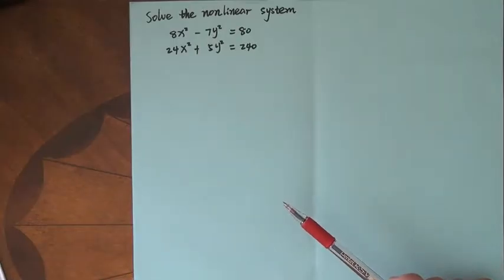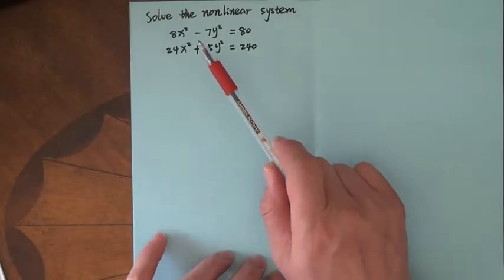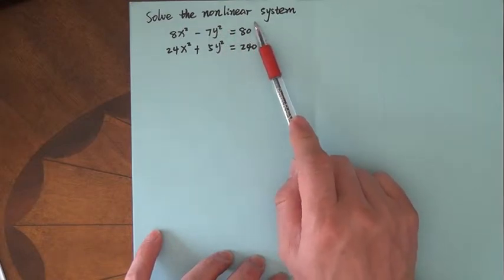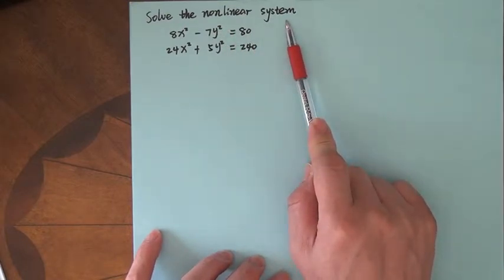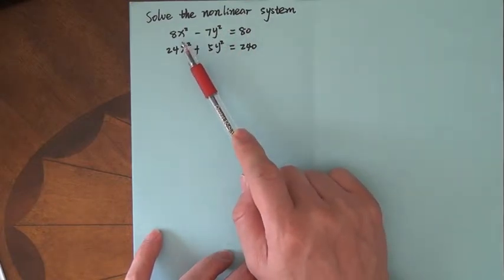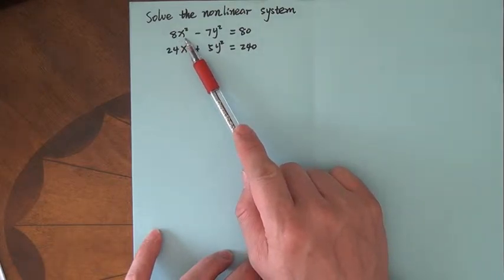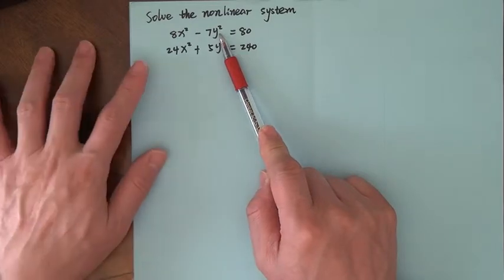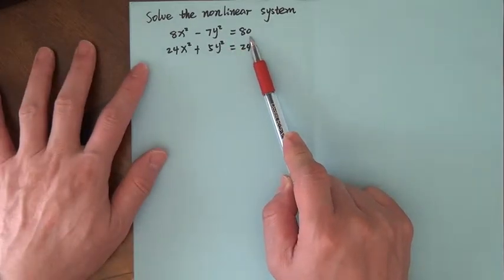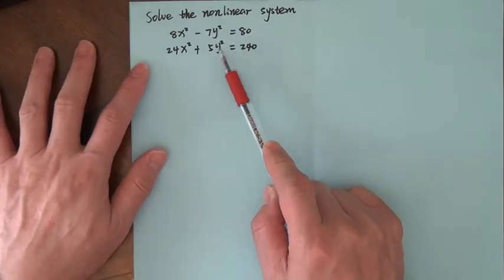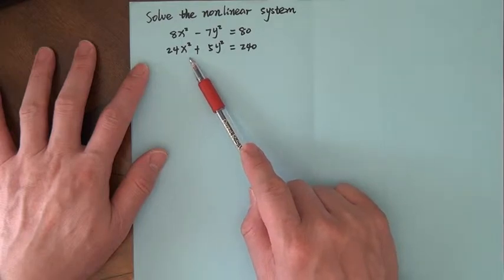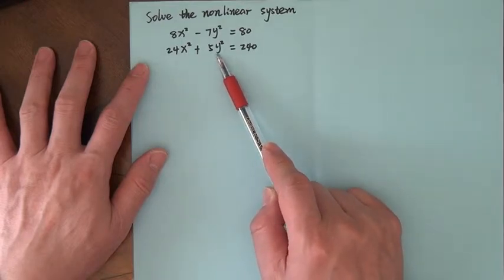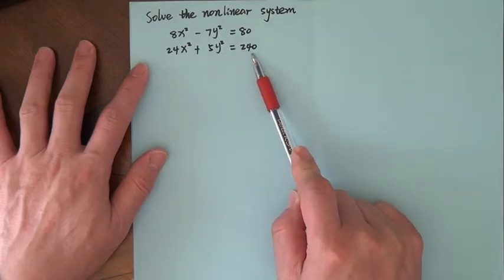In this lecture, let's see how we are going to solve this nonlinear system. The first equation is 8x squared minus 7y squared equals 80. The second one is 24x squared plus 5y squared equals 240.